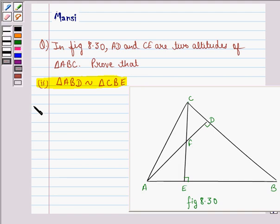So let us start with the solution to this question. Now we see that in triangle ABD and triangle CBE, first of all we see that angle B is common in both the triangles.